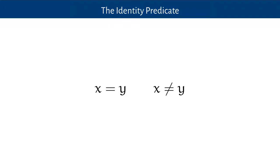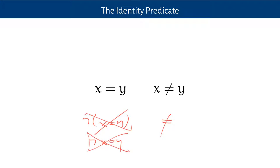The identity predicate is a two-place predicate, written traditionally between the terms. If I want to say that x and y name the same thing, I say that x is identical to y. If I want to say that x and y are different things, I say that x is not identical to y — x and y differ. The 'equals with a slash' symbol is just treated as a different way of writing the negation of 'x is identical to y', rather than writing the negation sign out front.